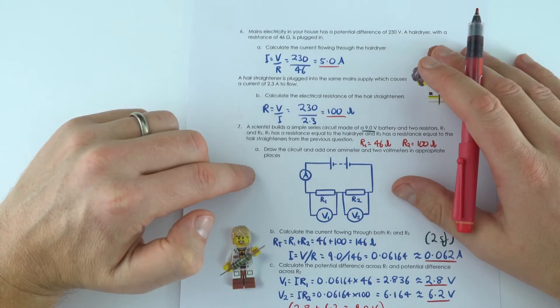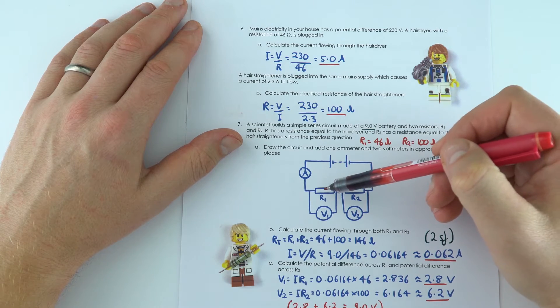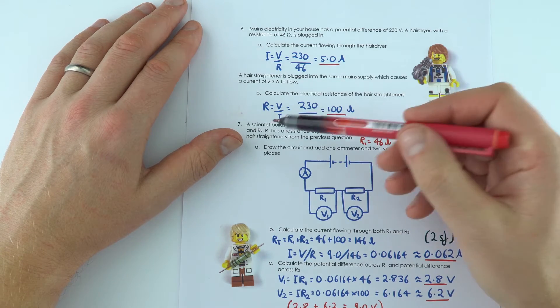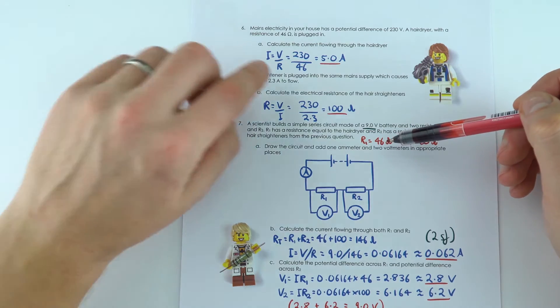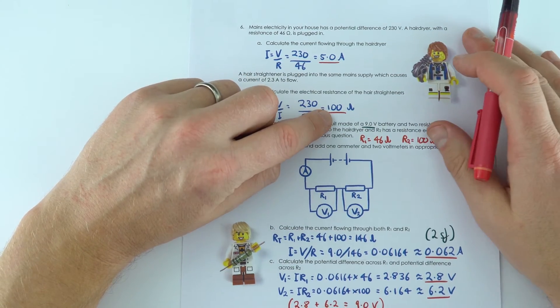And in the next question, what we then had was just a circuit showing we've got the battery here, we've got R1 and R2 are the two resistors. R1 from this question here has a value of 46, R2 has a value of 100.